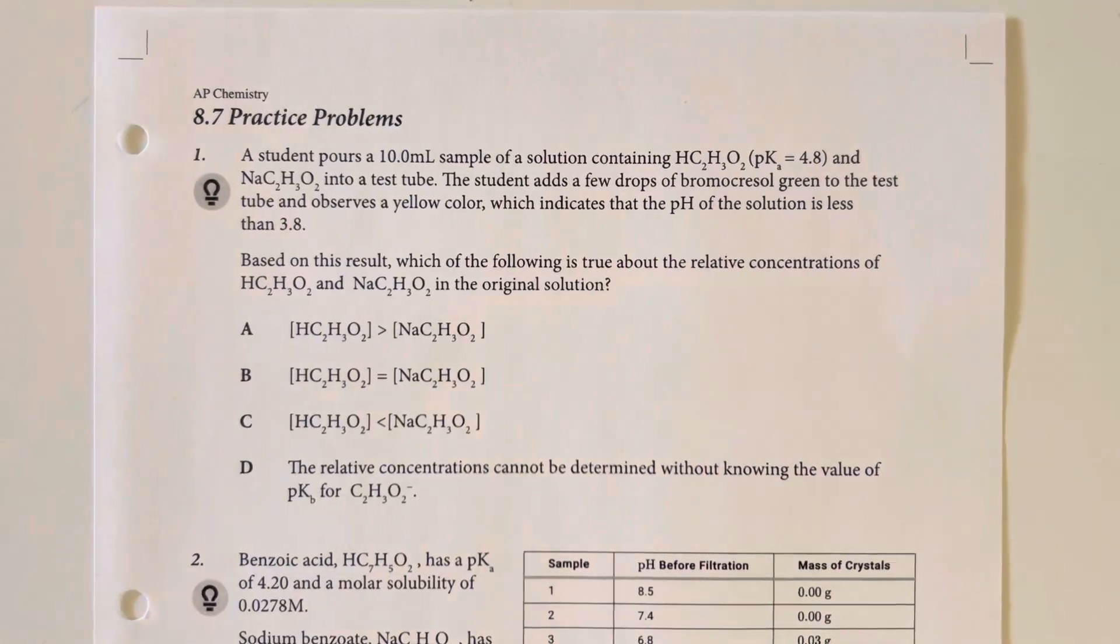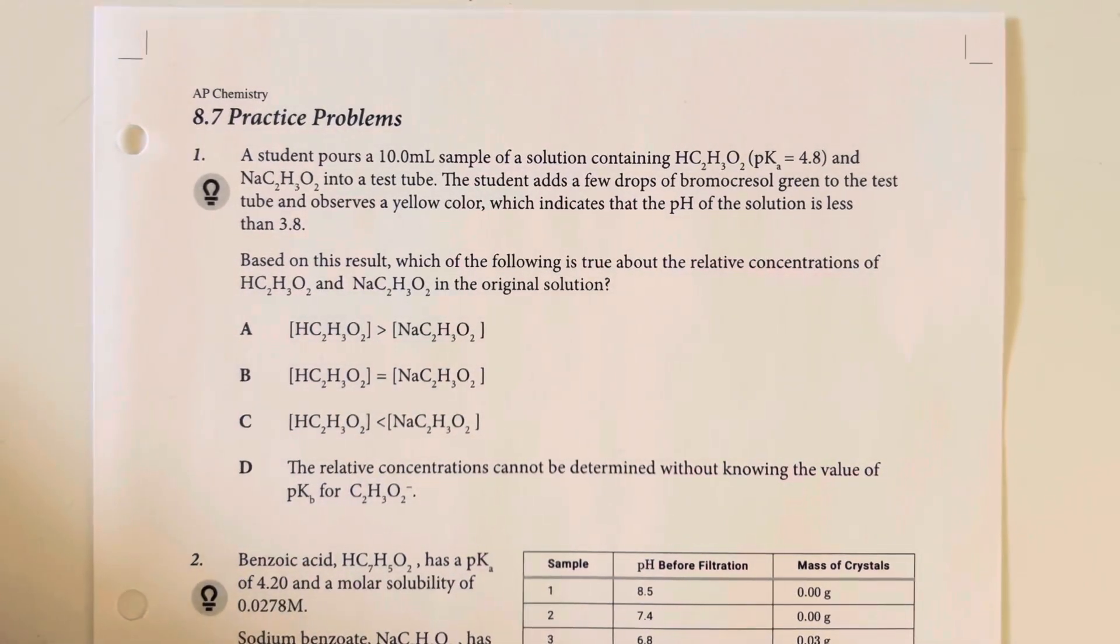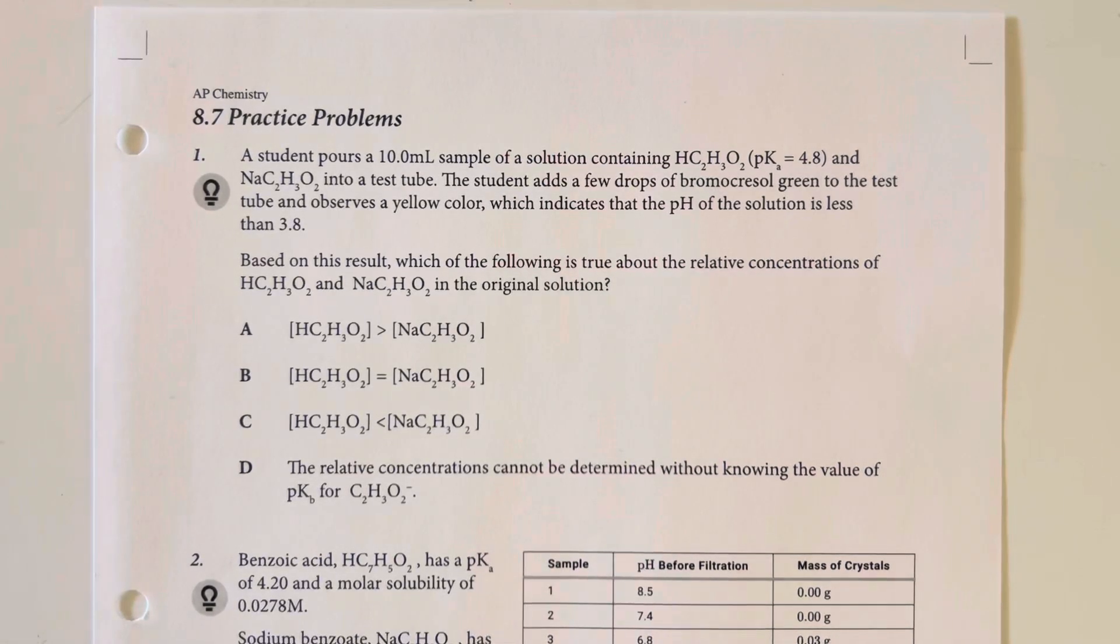8.7 practice problems. A student pours 10 milliliters of a sample of solution containing acetic acid with a pKa of 4.8 and sodium acetate into a test tube. The student adds a few drops of bromothymol green to the test tube and observes a yellow color, which indicates that the pH of the solution is less than 3.8. Based on the result, which of the following is true about the relative concentrations of acetic acid and sodium acetate in the original solution?